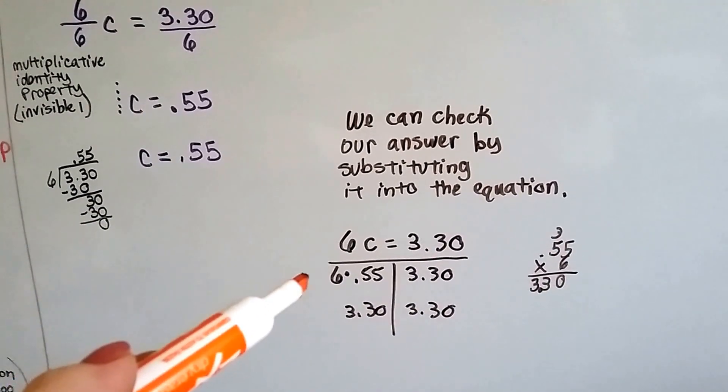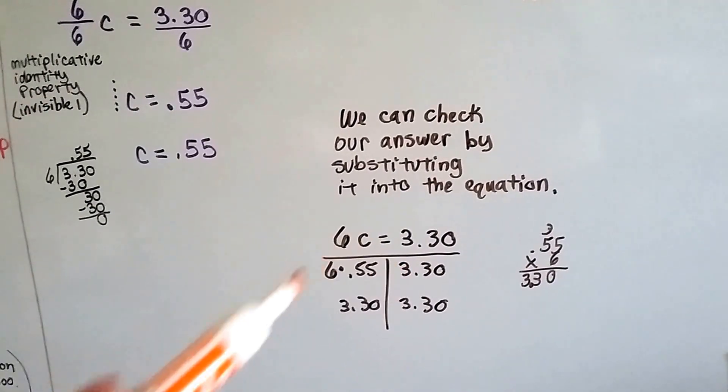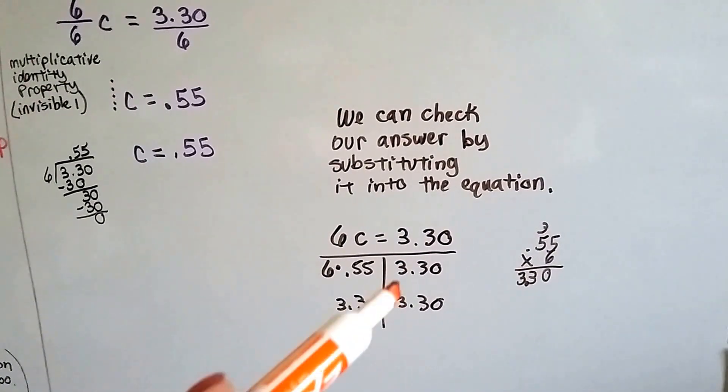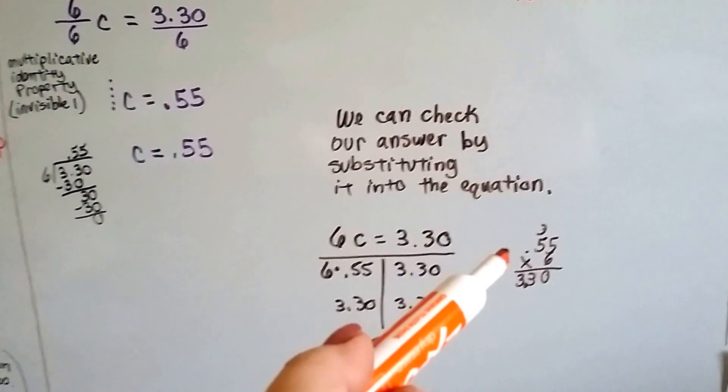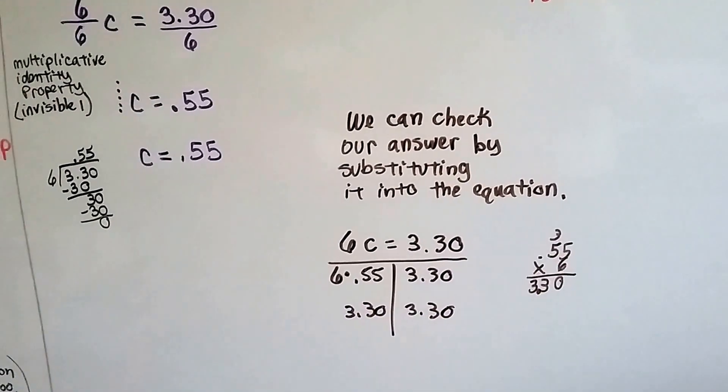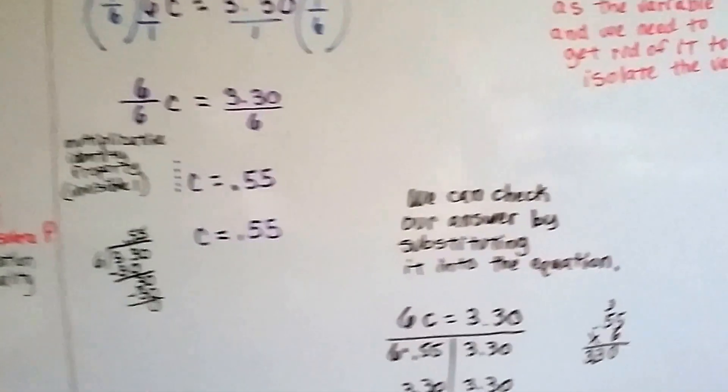So we just need to multiply .55 times the six to see if that'll get us back up to that six-pack of $3.30. And it does. .55 times six is 3.30. So we did it right.